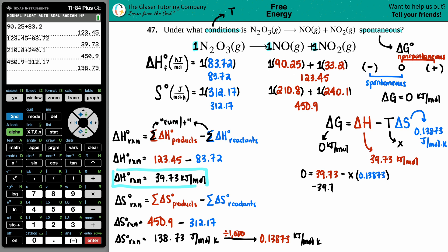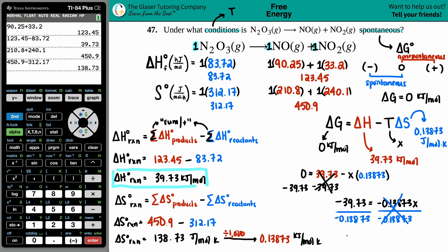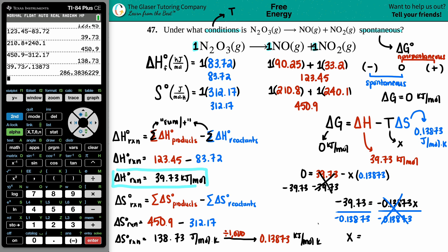Solving: subtract 39.73 from both sides to get negative 39.73 equals negative 0.13873 times T. Dividing both sides by negative 0.13873 — a negative divided by a negative is positive — we get T equals 39.73 divided by 0.13873, which is roughly 286 Kelvin.